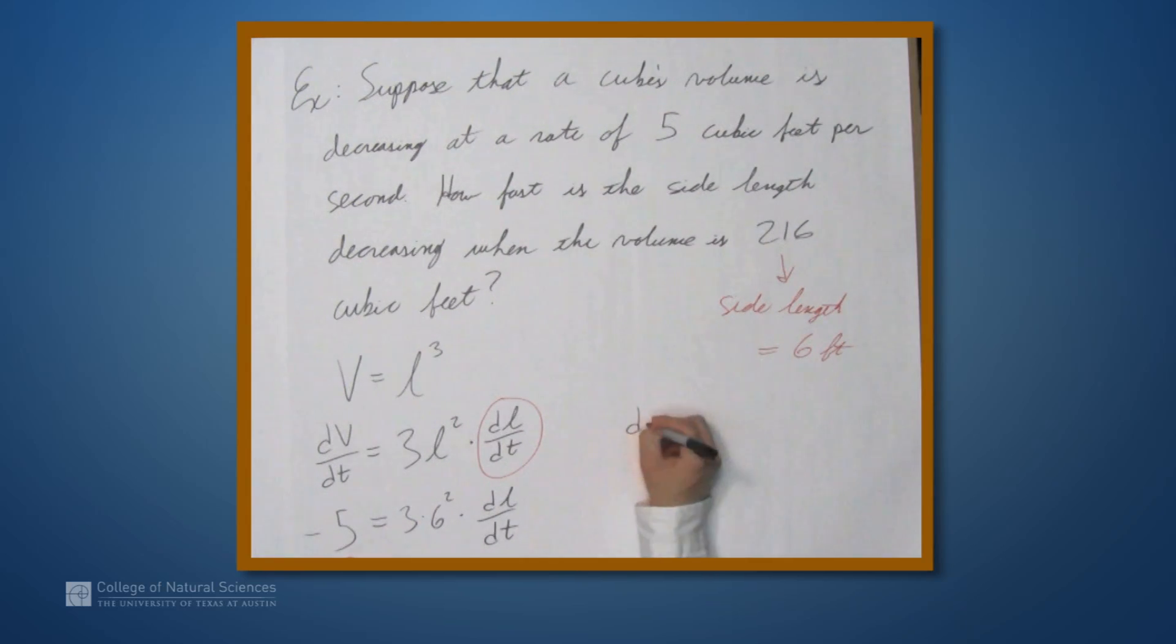So, if we solve for dl/dt, we get negative 5 divided by 3 times 6 squared, which is negative 5 over 108.